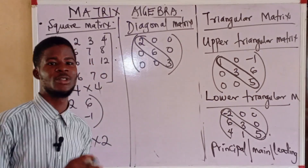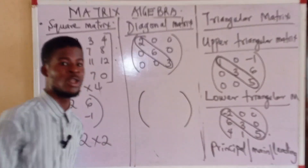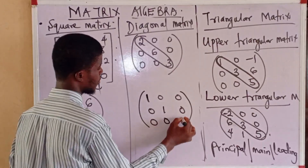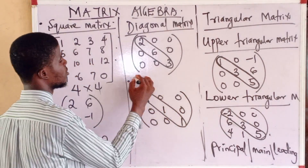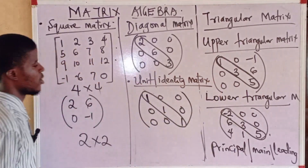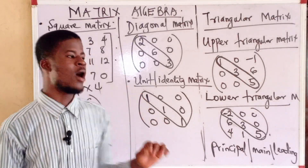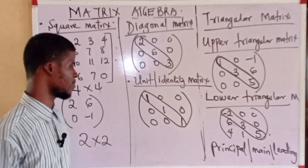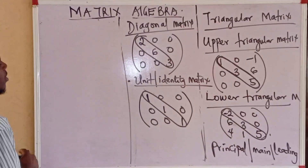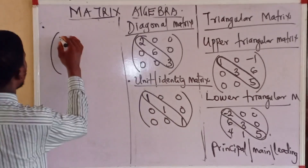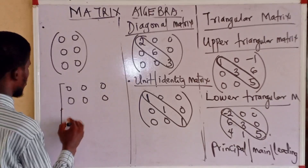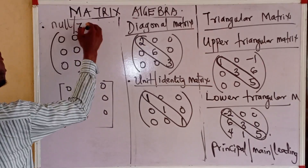A special case of the diagonal matrix is what we call the identity matrix or unit matrix. In a unit matrix, all the elements along the principal diagonal are 1 and all other numbers are 0. A unit matrix is always a square matrix. We also call the null or zero matrix: when all the elements in the matrix are 0, it is called a null or zero matrix.